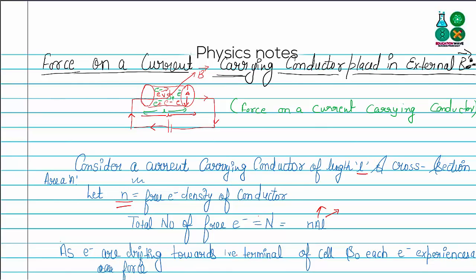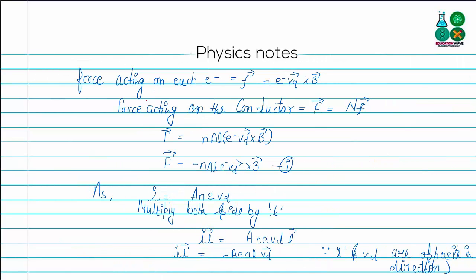As the electrons drift toward the positive terminal of the cell, each electron experiences a force. The force acting on each electron is denoted by small f, which is equal to the electron charge times the drift velocity times the magnetic field. Here the drift velocity is perpendicular to the magnetic field, which gives us the value of small f.